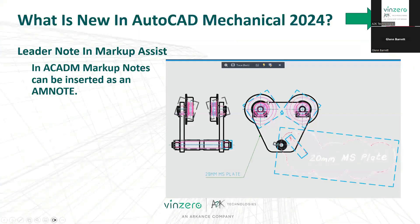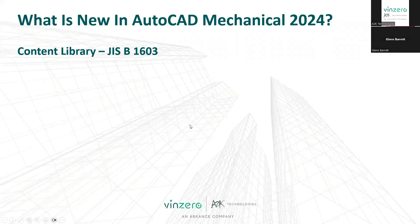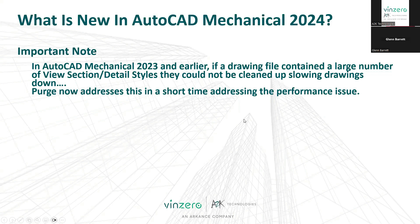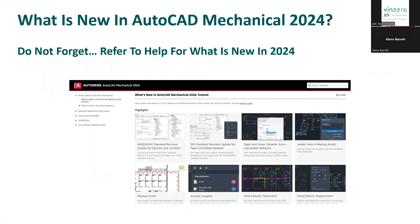Still staying with mechanical — if you use the JIS standard, we've got some enhancements done to that. JIS 1602 has been withdrawn and 1603 is replacing it. Some important notes: in Mechanical 2023 and earlier, if a drawing contained a large number of view sections and detail styles, you couldn't clean them up — if you got rid of them, they stayed there. They've now fixed it so that Purge addresses this. It will now clean those up and you'll get your performance back in Mechanical. And of course, you're also going to get all the new tools that come with AutoCAD, because Mechanical sits on top of AutoCAD.